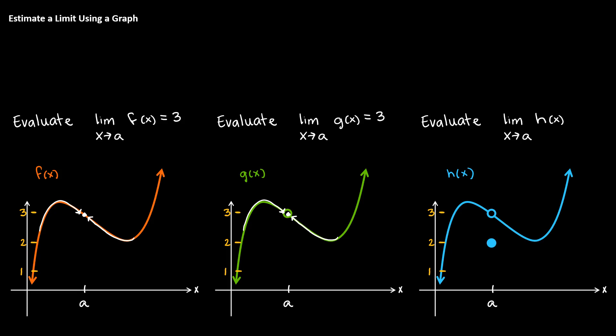Now what about h of x? The function value is defined at a, but it doesn't match the behavior of the function. So notice that here, the limit is still equal to 3. The function behavior is sending us to 3, even though the function output is equal to 2 when we plug a into it. So this is something to remember: we're not looking for what the function is defined to be equal to, we're looking for the behavior that leads us to that value.